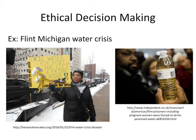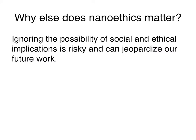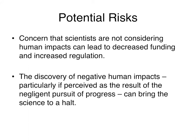For example, in Flint, Michigan, unethical decisions were made by several individuals that resulted in city-wide water contamination from toxic levels of lead. It is important to consider how your decisions and the decisions of those around you can impact others immediately and in the future. Nanoethics also matters because ignoring the possibility of social and ethical implications is risky and can jeopardize future work. For example, concerns that scientists are not considering human impacts can lead to decreased funding and increased regulation.